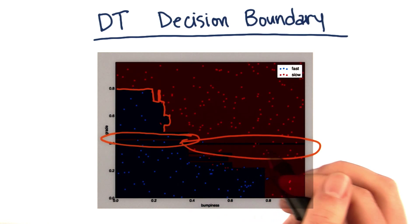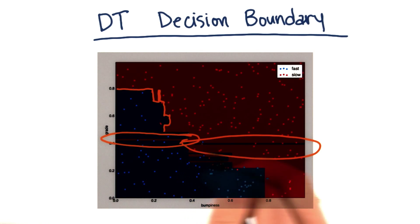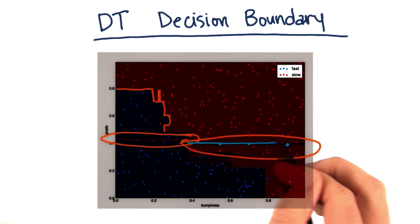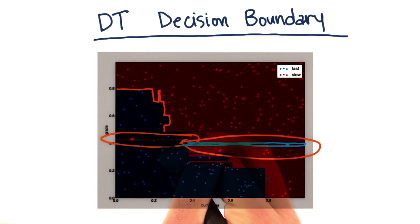And I bet that if you plotted the training points instead of the test points on top of this decision boundary, you'd find that there's a few blue training points that are maybe out along here that are causing the decision boundary to come way out and try to pick those up, and likewise for maybe some red points over here.